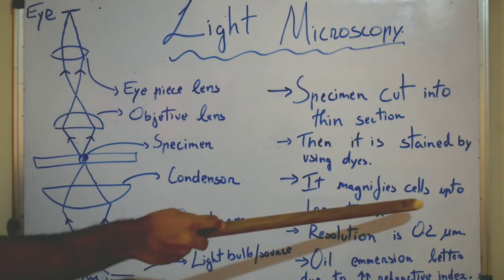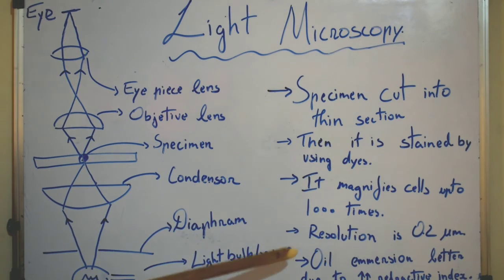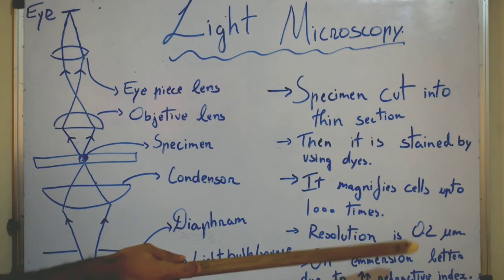The magnification of light microscope is up to 1000 times. And the resolution is 0.2 micrometer.